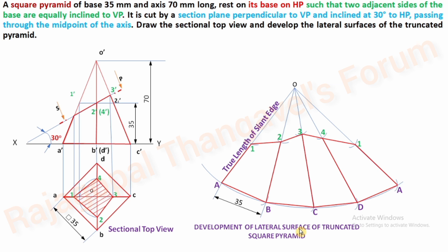This is the development of the lateral surface of the truncated square pyramid. One step was minimized for us because two slant edges were parallel to XY. If none of the slant edges are parallel to XY, always remember you must shift one of them to be parallel to XY to find the true length. For that kind of problem, check the hexagonal pyramid development or the pentagonal pyramid — in both, we made a slant edge parallel to XY to identify the true length.